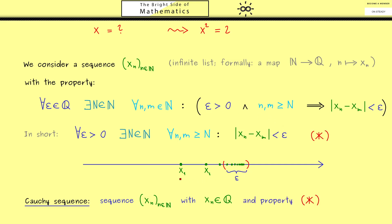When you see this picture you might think that there should be a point we should call a limit point. However we have seen with our example of the square root of 2 that this is not the case in general. This wish to have a limit point for all Cauchy sequences is what leads us to the real numbers in the end. So you see we have a lot to do — therefore I hope I see you in the next video.